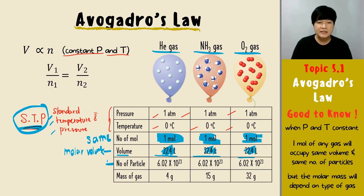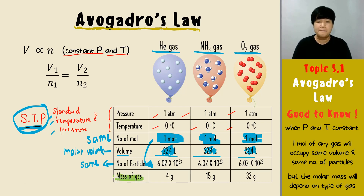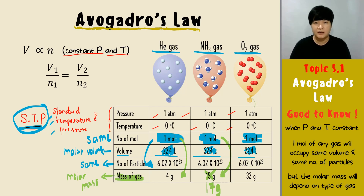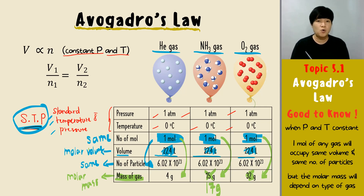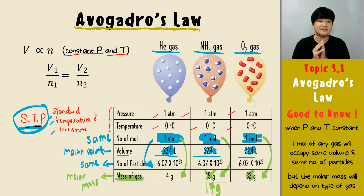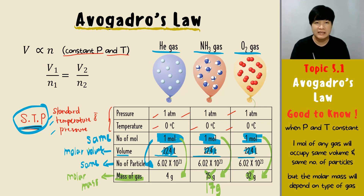The number of particles is also the same, since one mole of anything equals Avogadro's constant. The only thing that changes is the molar mass: one mole of helium is 4 g, one mole of ammonia is 17 g, and one mole of oxygen gas is 32 g. So the only thing that differs is the mass of the gas.